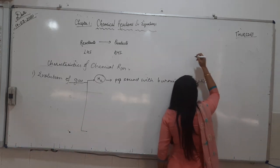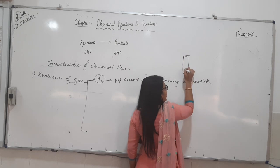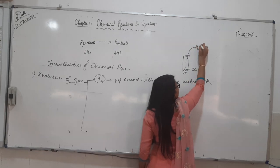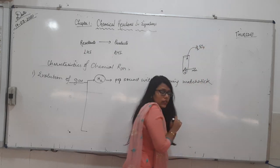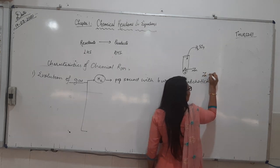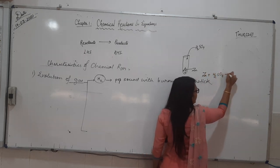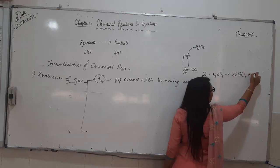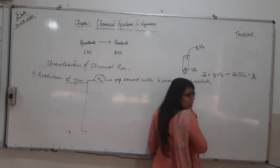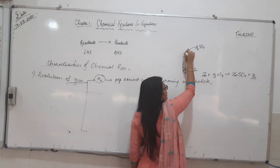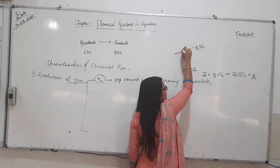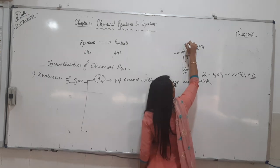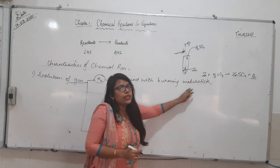For example, if I am taking a test tube and putting zinc granules in it and pouring H2SO4 — that is sulfuric acid — into it, the zinc reacts with the sulfuric acid: Zn + H2SO4 forms zinc sulfate ZnSO4 and hydrogen gas is evolved. When this hydrogen gas is evolved, if we bring a burning matchstick towards it, it will produce a pop sound, confirming that hydrogen gas is evolved.